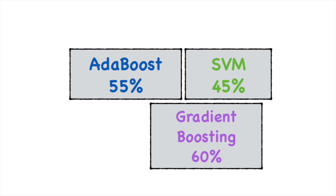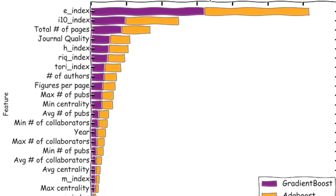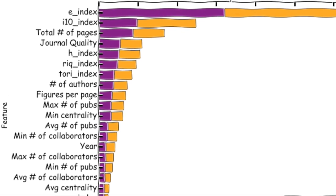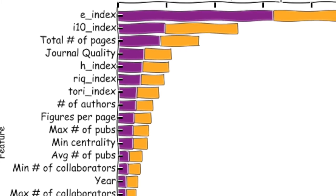With these classifiers, we can predict the correct citation category 60% of the time, which is twice better than random chance. This is good news, because the fact that we don't get 100% accuracy would suggest that the scientific quality actually matters.